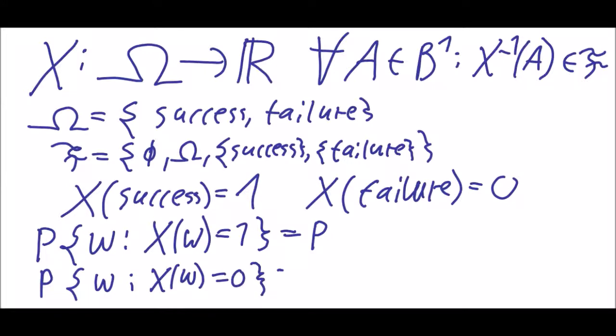This is a two point distribution or we call this a two point distributed random variable because there are two points, 1 and 0, and we get 1 with probability p and 0 with probability 1 minus p.